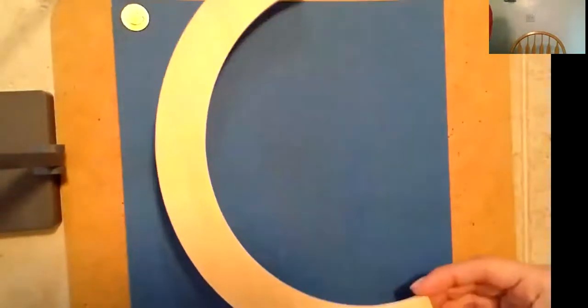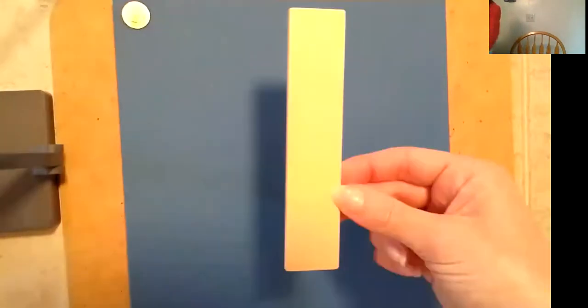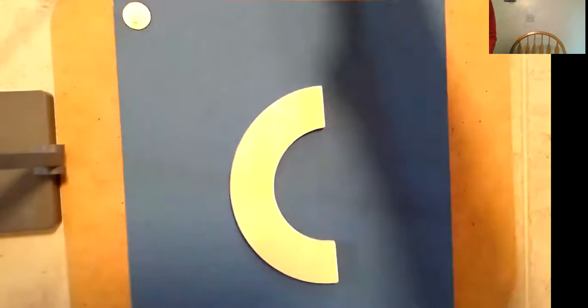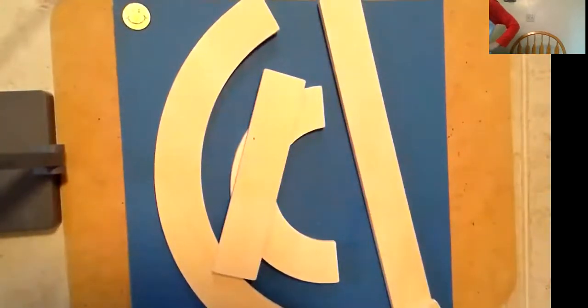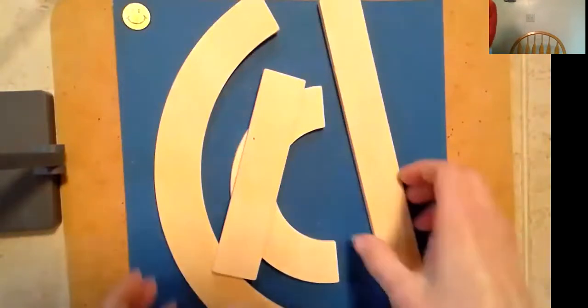I wanted to go over some of the materials that we use during center time and see if you can remember them. First one is a big curve, we have a big line, a little line, and a little curve. So we use these lines and these curves to form letters.